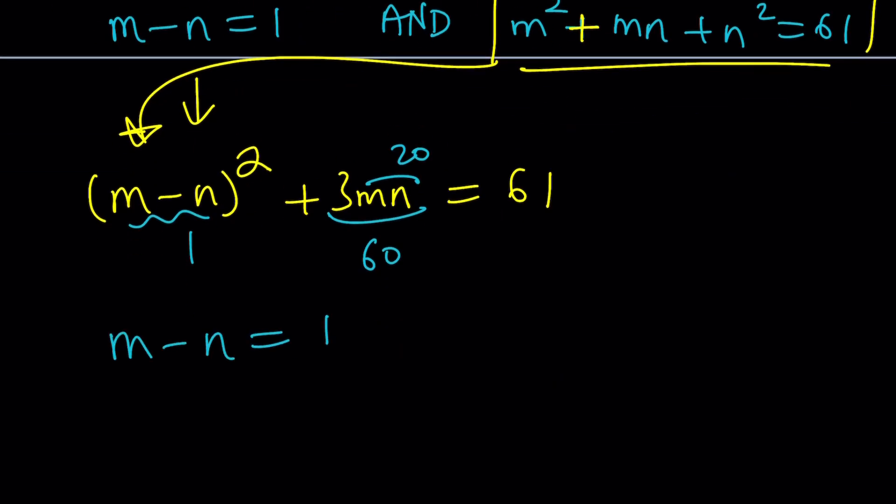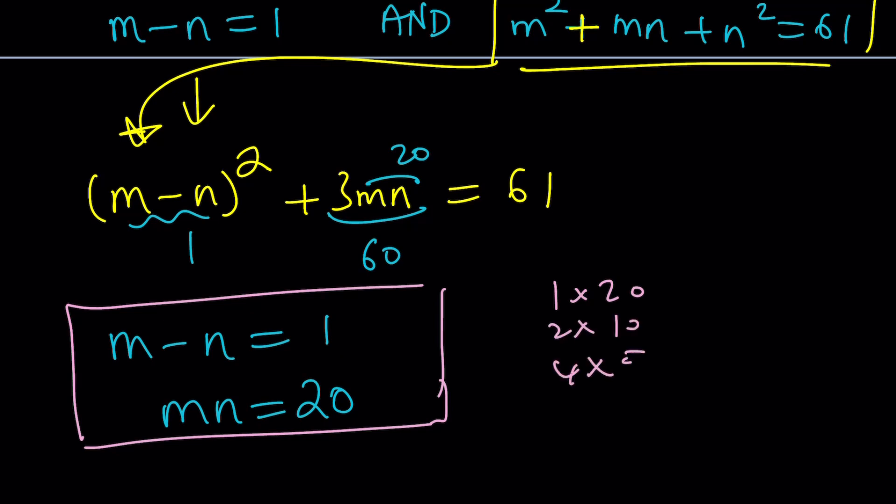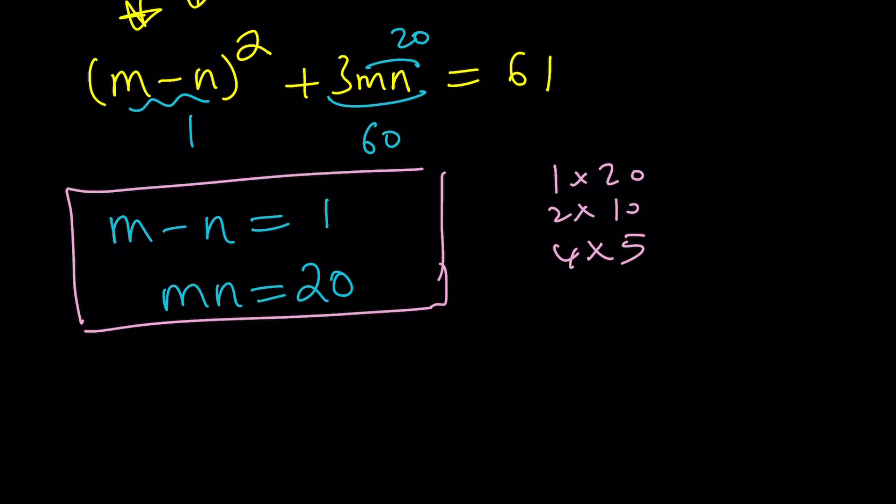So we get a new system: m minus n equals 1, m n equals 20. I'm sure you can solve the system even mentally. Think about two numbers whose difference is 1 and their product is 20. 20 can be factored as 1 times 20, 2 times 10, 4 times 5. The bigger number needs to be m, because that's a positive difference. So from here, I get m equals 5, n equals 4 easily.